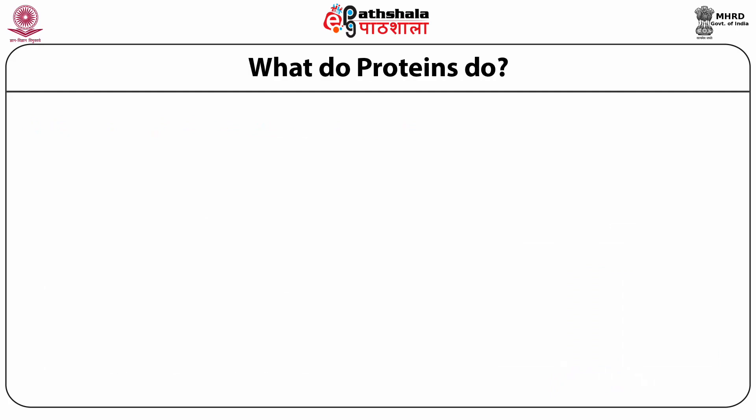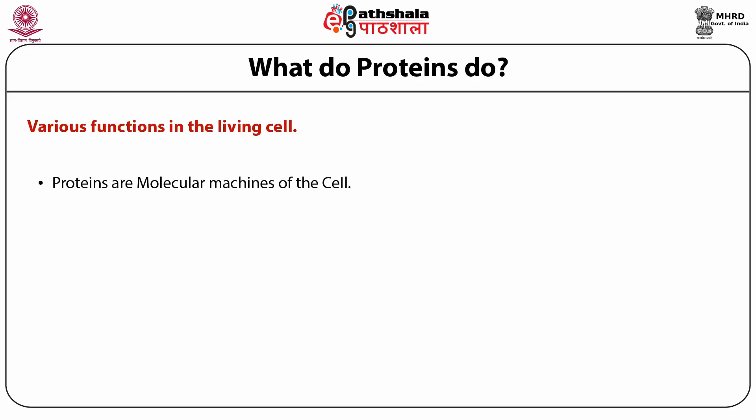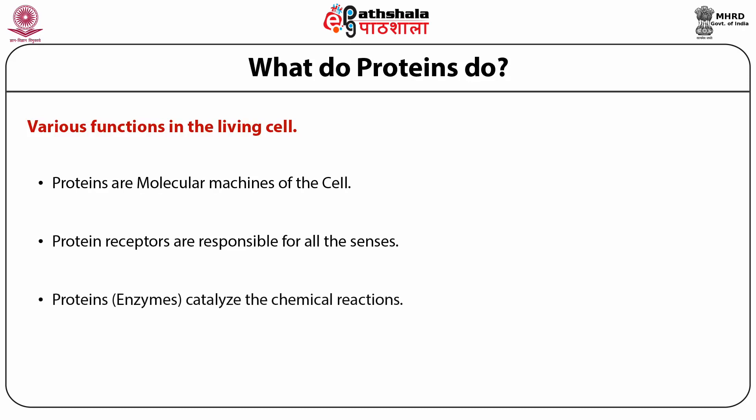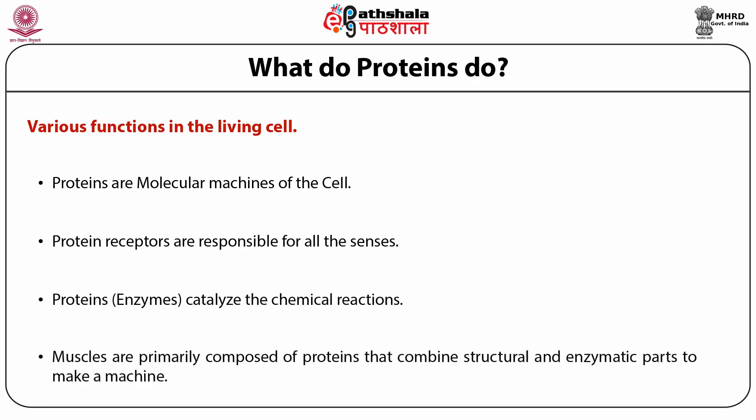What do proteins do? They perform various functions in living cells. Proteins are the molecular machines of the cell — small machines that do a lot of things in our body. Protein receptors are responsible for all the senses, and proteins catalyze chemical reactions. Muscles are primarily composed of proteins that combine structural and enzymatic parts to make a machine.